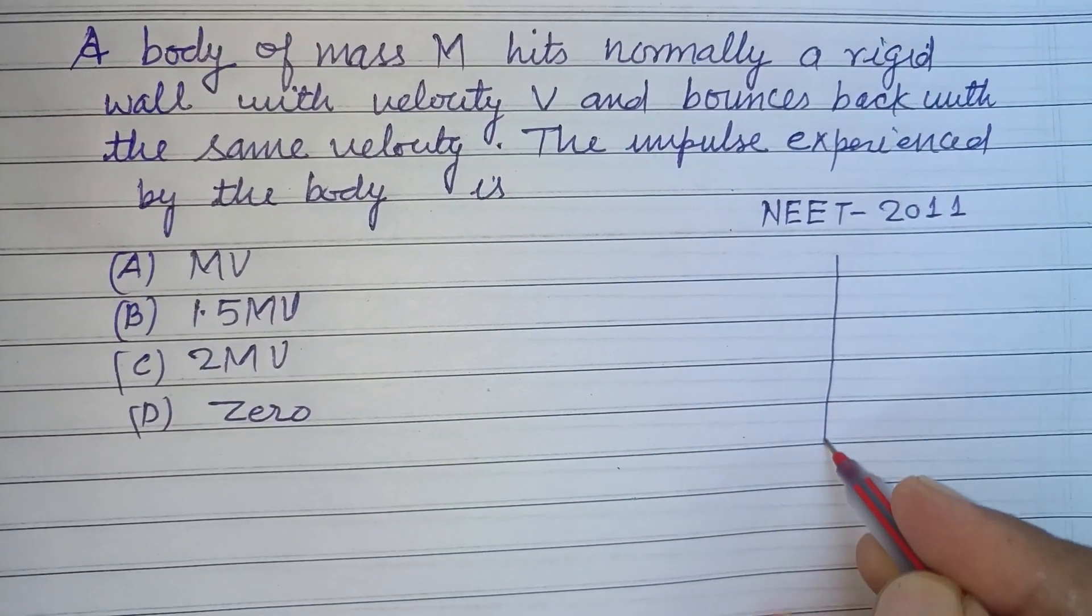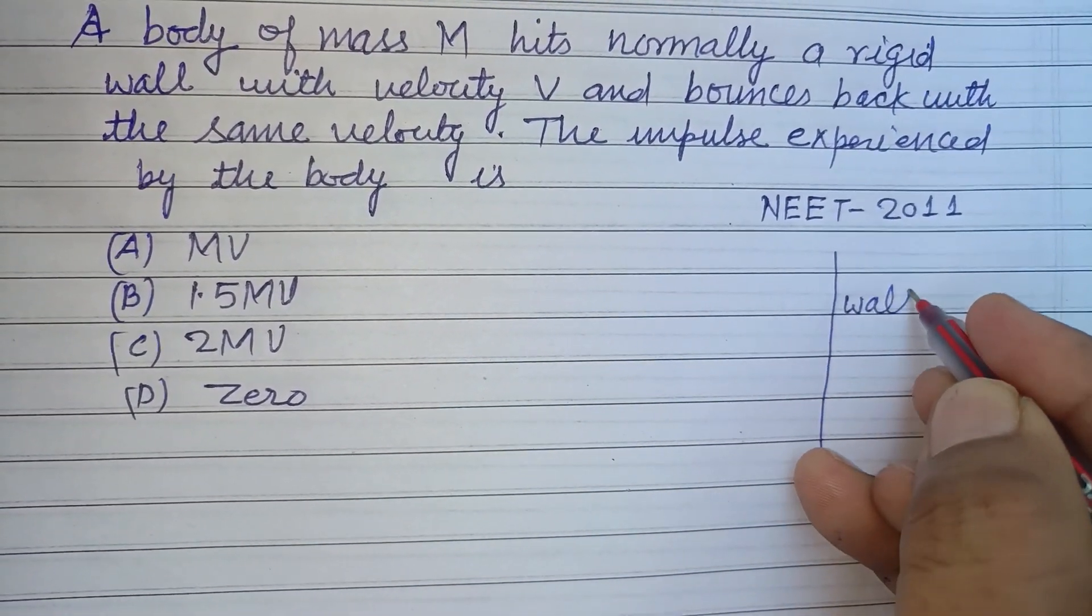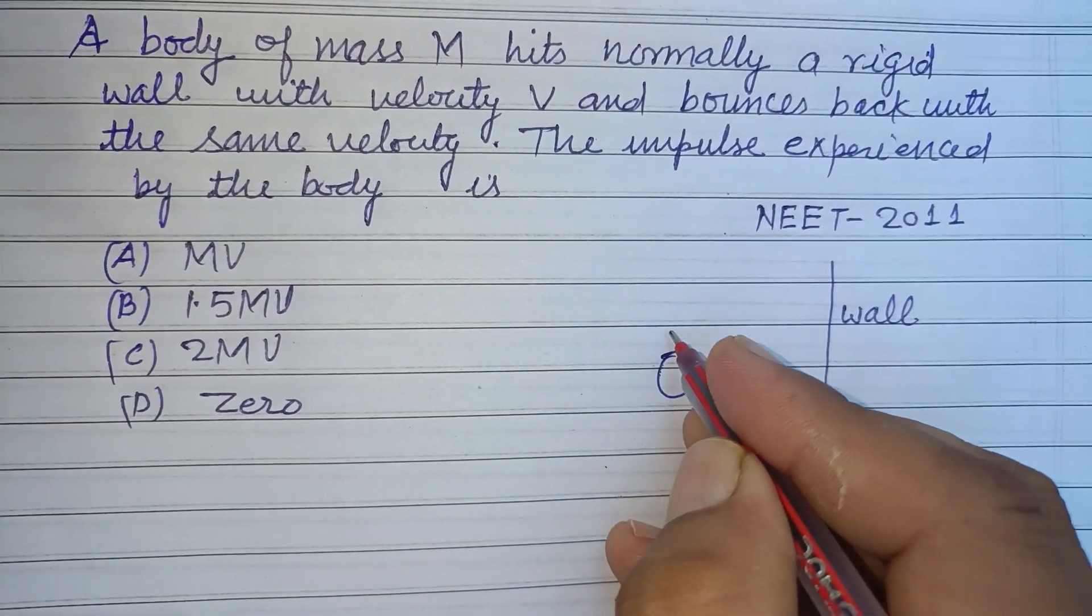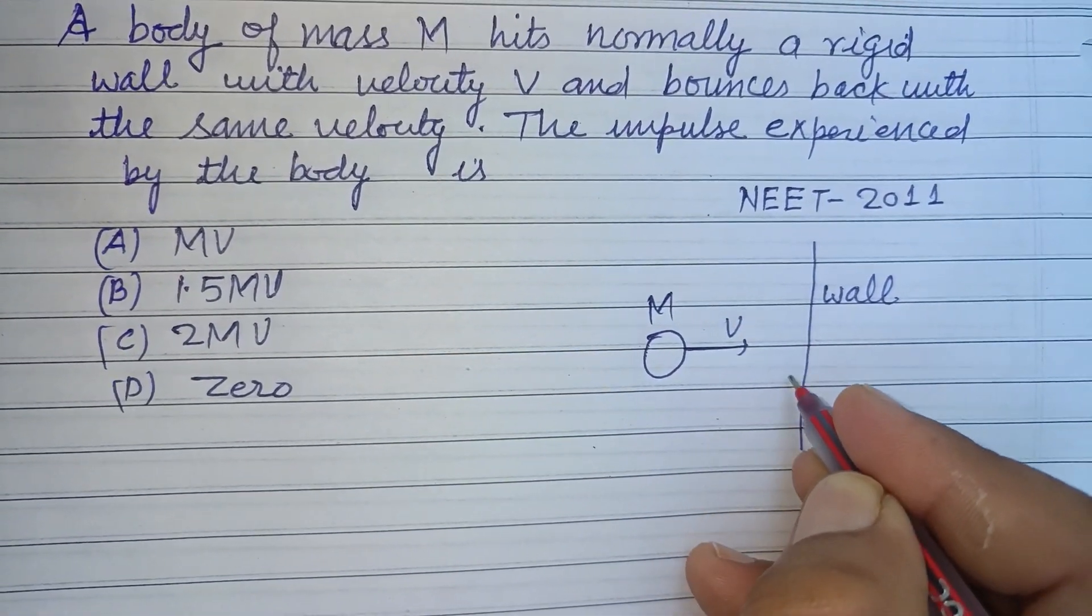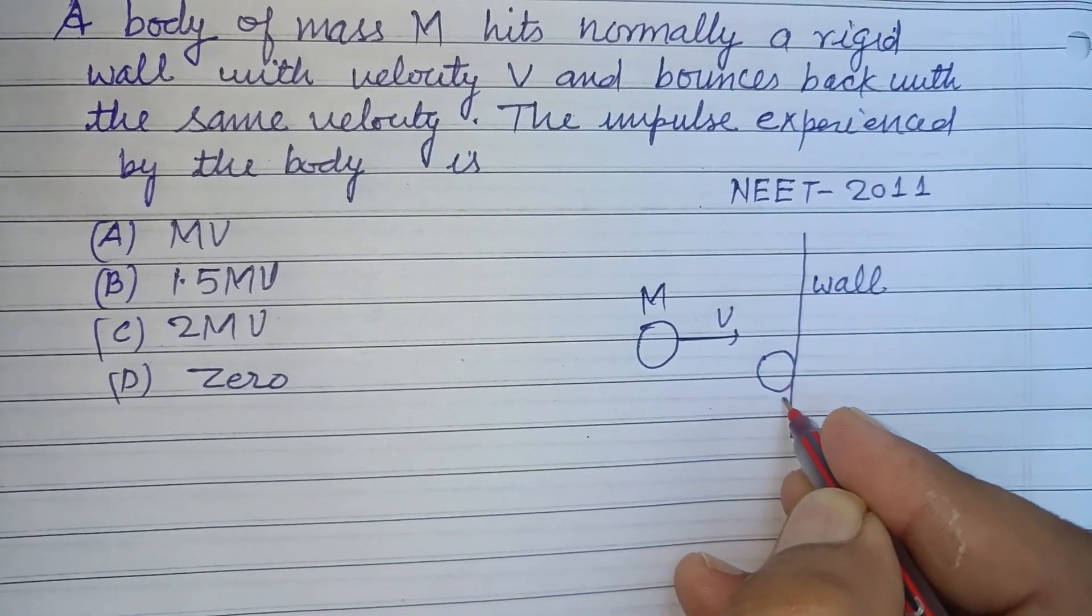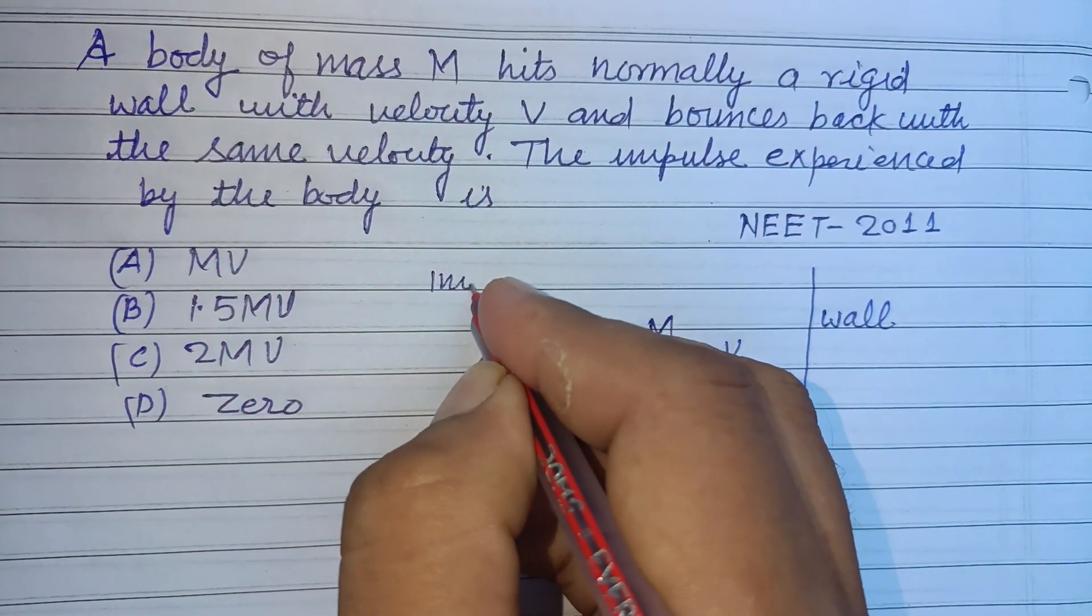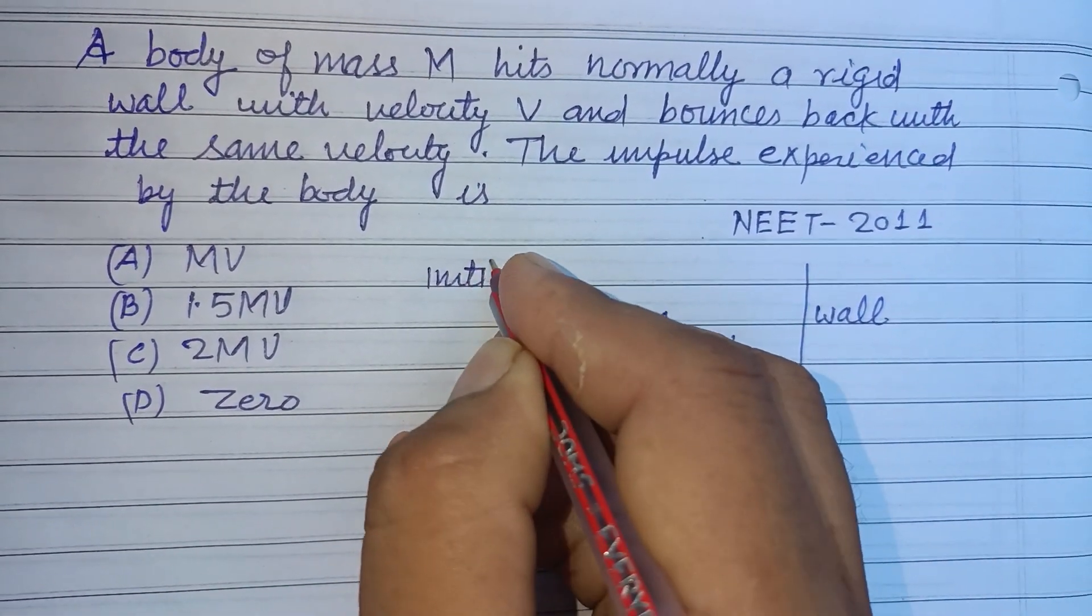So students, this is the wall and a body of mass capital M moving with velocity V hits this wall and bounces back with the same velocity V. So initial momentum...